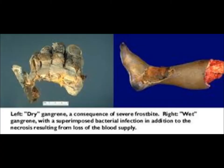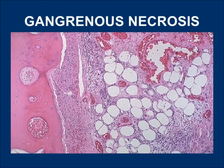If there is ischemia of the extremity, it is sometimes called dry gangrene. If superadded by bacteria causing putrefaction, it is called wet gangrene. Some clinicians use these terms; otherwise gangrenous necrosis is a type of ischemic necrosis with the same morphology.